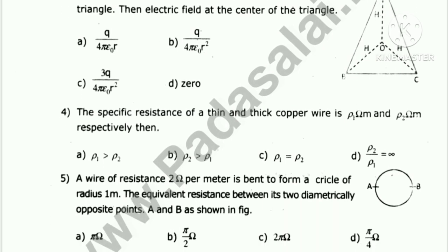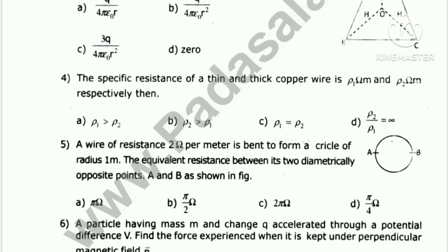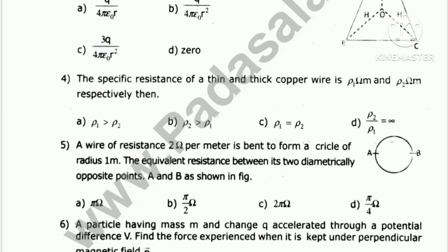The specific resistance of a thin and thick copper wire is ρ1 ohm-meter and ρ2 ohm-meter respectively.